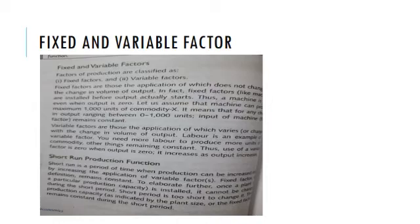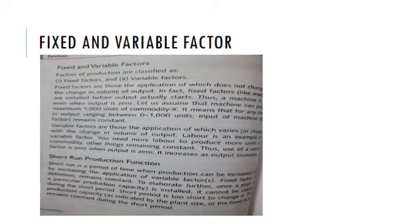Short run is a period of time when production can be increased only by increasing the application of variable factors, while fixed factors remain constant. To increase production, we increase the units of labour only, whereas machines remain constant, so the factor ratio changes. For example, we start with one labour and one machine, then increase to two, three, four units of labour, while machines remain at one unit. This kind of production function is known as variable proportion type production function.